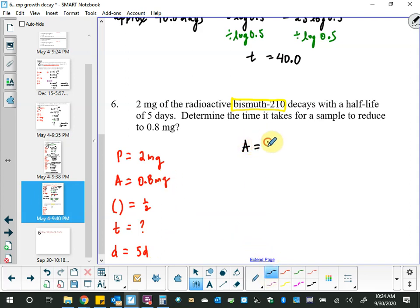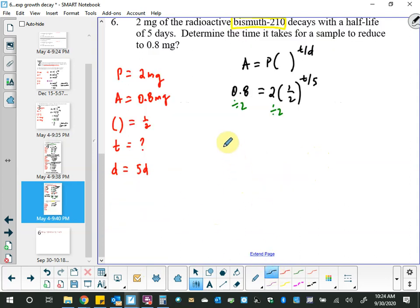Two milligrams of the radioactive substance bismuth 210, started with, decays with a half-life of five days. Determine the time it takes for a sample to reduce to 0.8 milligrams. Main formula. Fill it in. Divide both sides by two. Log both sides. 0.4 equals 0.5. And then drop the exponent down in the front. Which is exactly why you log both sides. Because of that law of powers. I like the one for the visual of crossing this way. So, one times T log 0.5 is T log 0.5. 5 times log 0.4 is 5 times log 0.4.